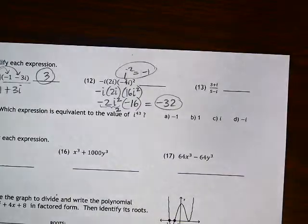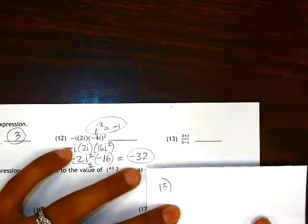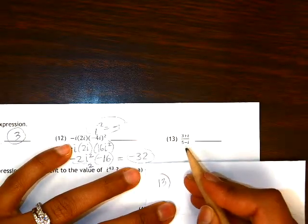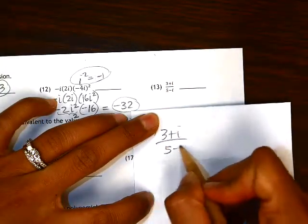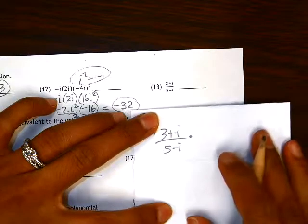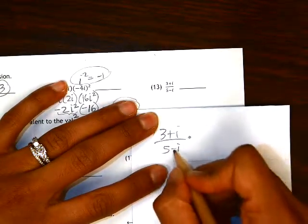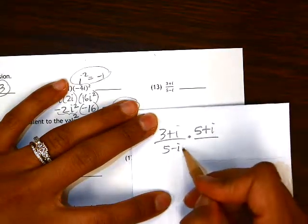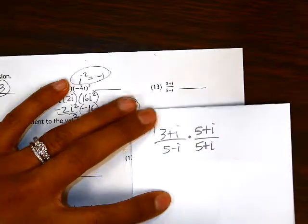Alright, on number 13, the goal here is to simplify, which means to not have any complex numbers with imaginary parts in the denominator. In order to do that, we need to multiply the numerator and the denominator by the conjugate of the denominator. The conjugate of this is 5 plus i. The only thing that changes is the sign of the imaginary part.